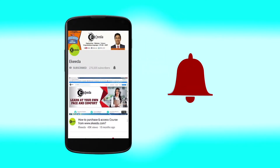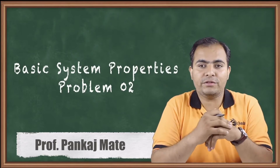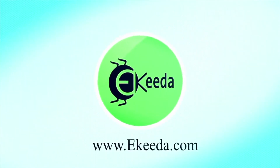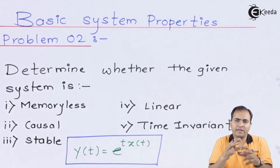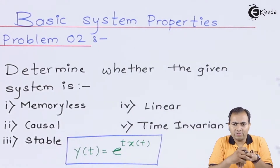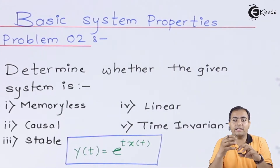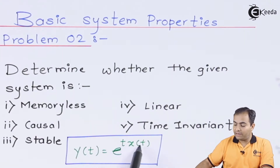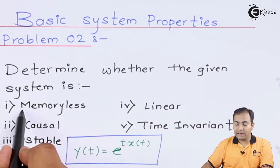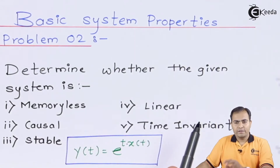Hello friends, today we are going to study problem number two based on system properties. Here we are going to find out whether the system is memory-less (static) or dynamic, causal or non-causal, linear or nonlinear, stable or unstable, and time variant or invariant. The question is: y(t) = e^t · x(t). We will solve all these parts one by one.